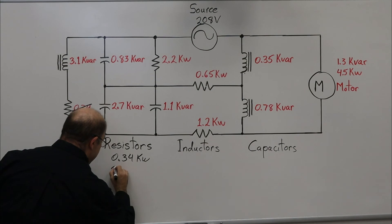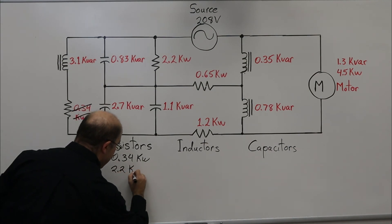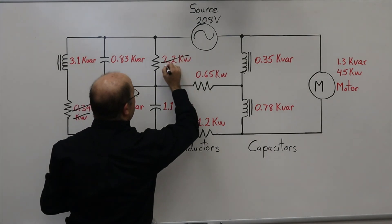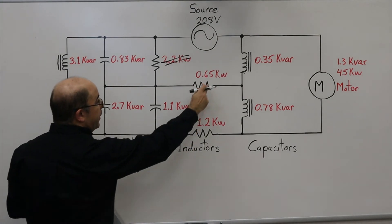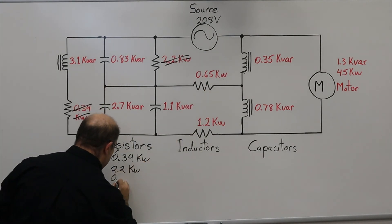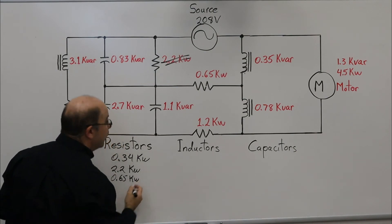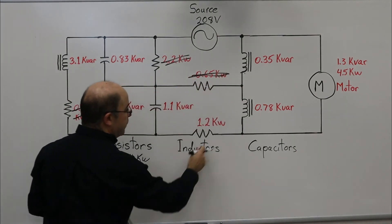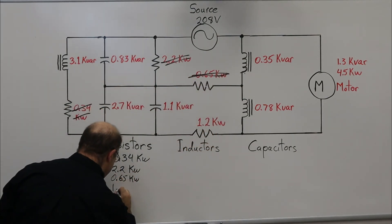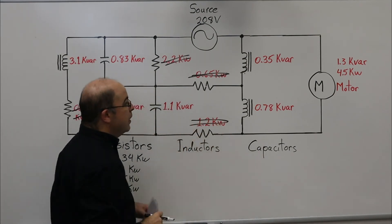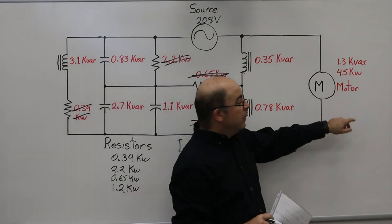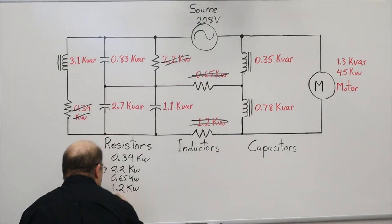2.2 kW, strike it off. 0.65, taken care of. 1.2, done. And let's not forget our motor—it counts twice: 4.5 kW.